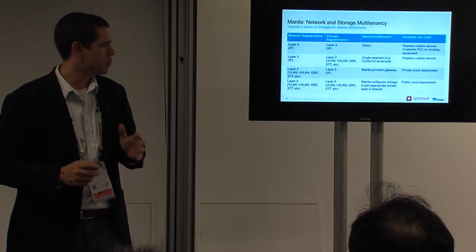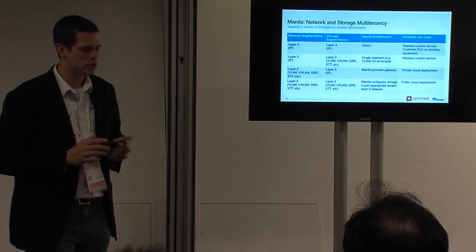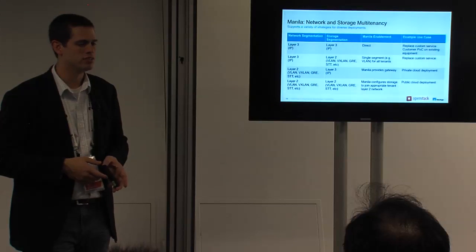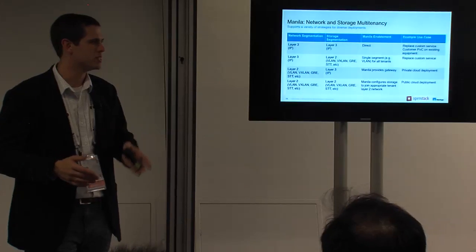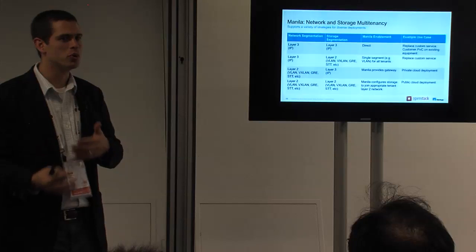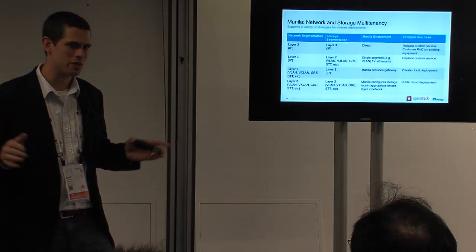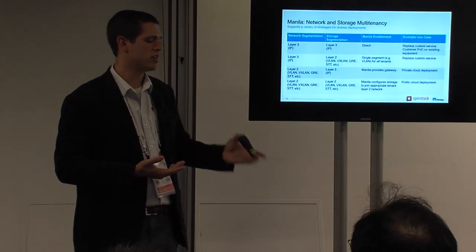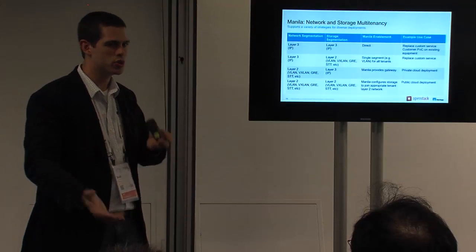The introduction of networking creates an interesting set of use cases for Manila. A customer perhaps hasn't adopted Neutron at all — you've got flat layer-three networking everywhere and the backend storage doesn't support any elegant layer-two segmentation. Manila has to be able to support that direct mapping between a share on an IP network. That comes up a lot when you have an existing service that isn't VLAN-aware or VXLAN-aware and simply assumes IP access from everyone.